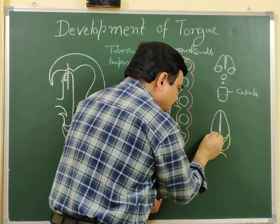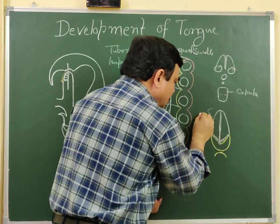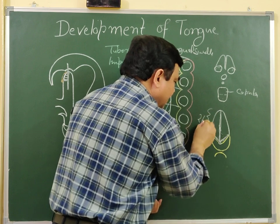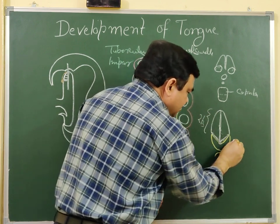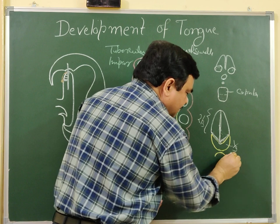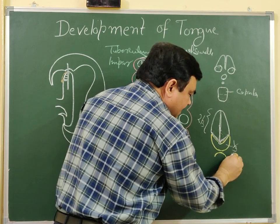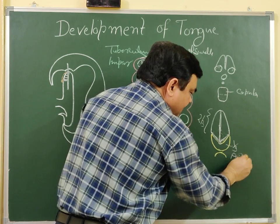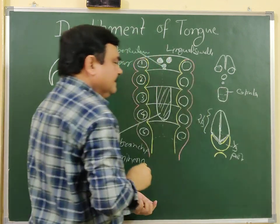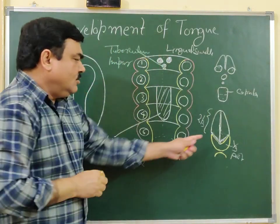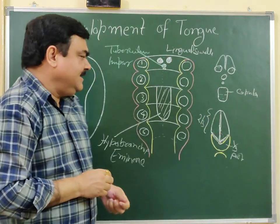This part is the anterior two-thirds of the tongue, and this is the posterior one-third of the tongue. The posterior-most part of the tongue develops from this part. So the tongue develops like this.